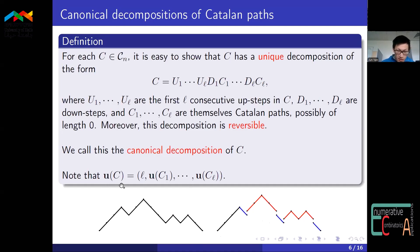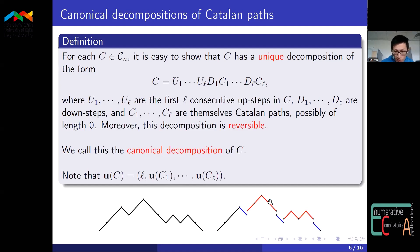Let's quickly note that the vector U of C under this decomposition has first entry L, and the rest of the vector is just a concatenation of the vectors U of C1 through U of C_L, because each block of upsteps is not broken into pieces by this decomposition — it will always be entirely contained within one of these smaller sub-paths.